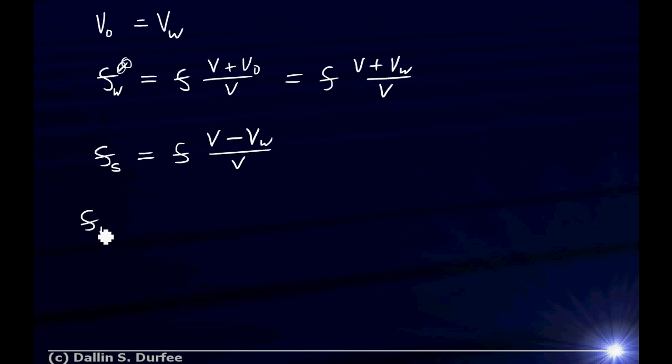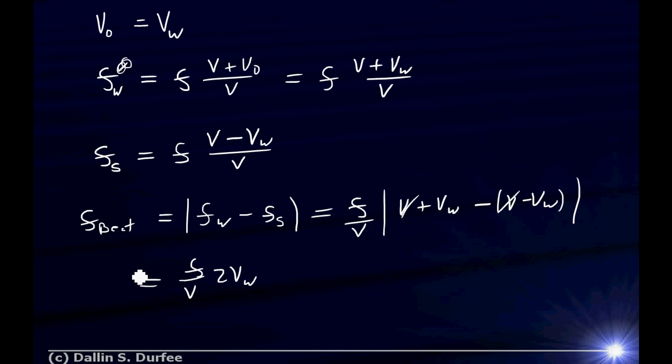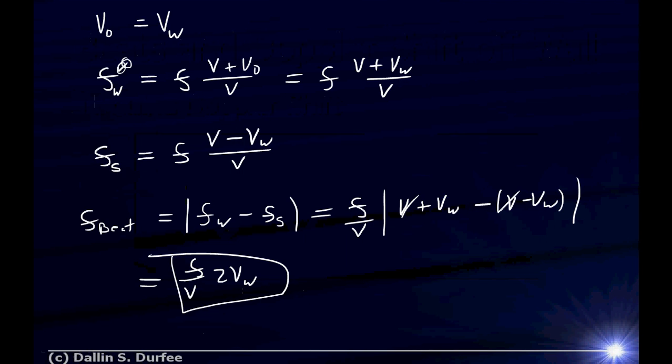So the beat frequency, which is the frequency of the pulse as we found before, it's just going to be the absolute value of the difference of those two. But that's just going to be equal to—I take this minus this. The f can come out front. The v can come out front, the one over v. And then I'm just left with v + v_walk - (v - v_walk). And that turns out to be f/v times—that cancels with that—and then I just get 2v_walk. There it is. And what did we get before? 2f v_walk over v. So we got the same thing. Two different ways to work the same problem.